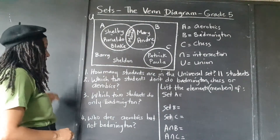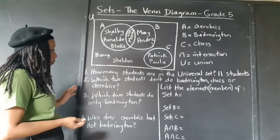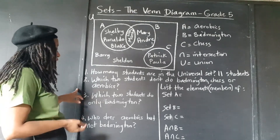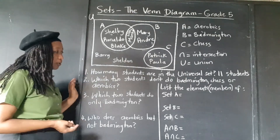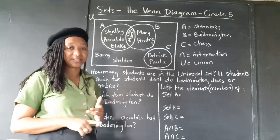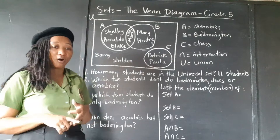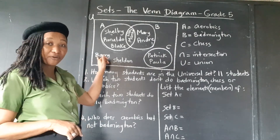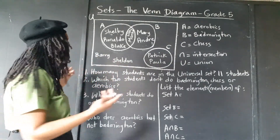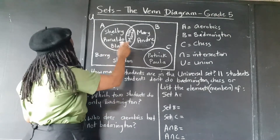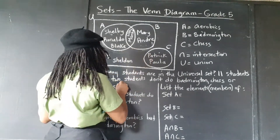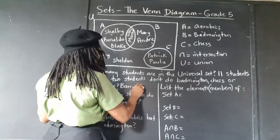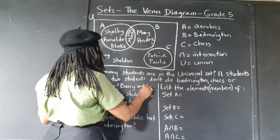Which two students don't do badminton, chess, or aerobics? So that would be Barry and Sheldon. They are not a member of either of those sets — Barry and Sheldon.